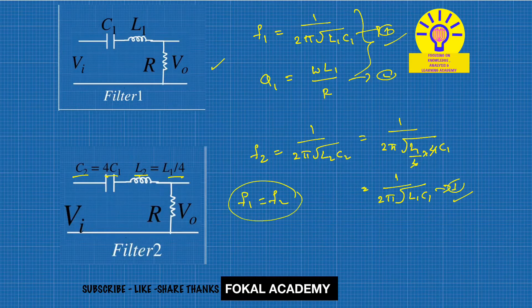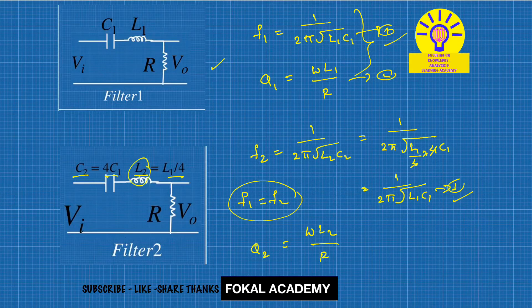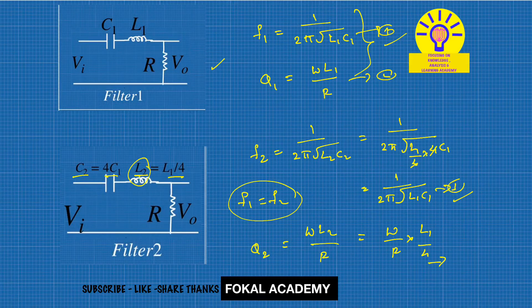For filter 2, the quality factor Q2 = ωL2 / R. Since L2 = L1/4, this becomes Q2 = (ω/R)·(L1/4). Now we proceed to find the bandwidth for both filters.